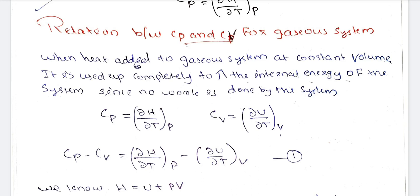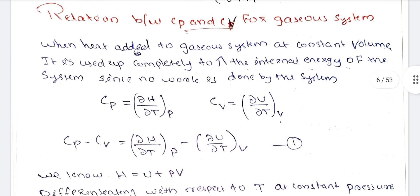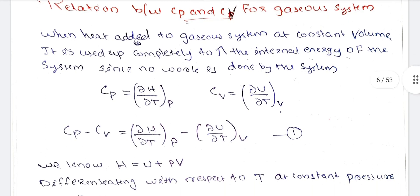We now define Cp and Cv. Cp is the heat capacity at constant pressure, defined as the partial derivative of H with respect to T at constant pressure. Cv is the heat capacity at constant volume, defined as the partial derivative of U with respect to T at constant volume.